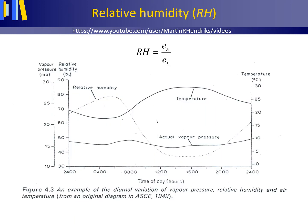This is a picture showing the variation of vapour pressure, relative humidity and air temperature during a day. On the vertical axis we have the vapour pressure in millibar or hectopascal and the relative humidity as a percentage. The relative humidity as a fraction is the actual vapour pressure divided by the saturation vapour pressure at that same temperature.